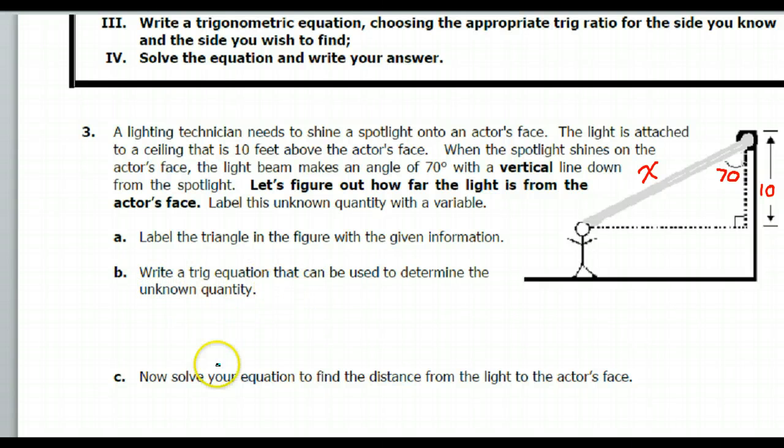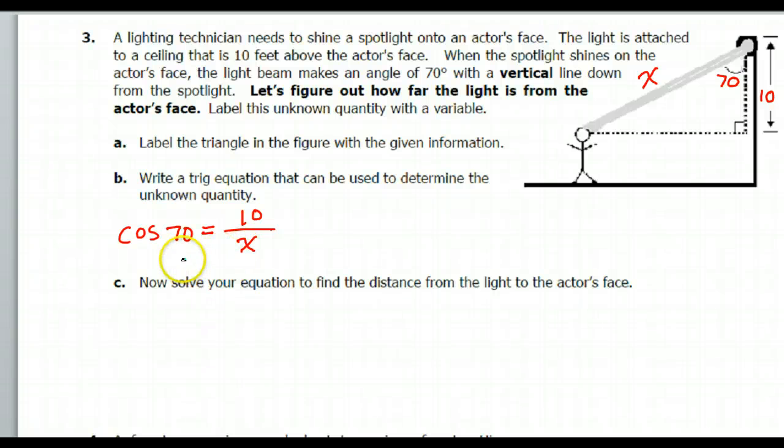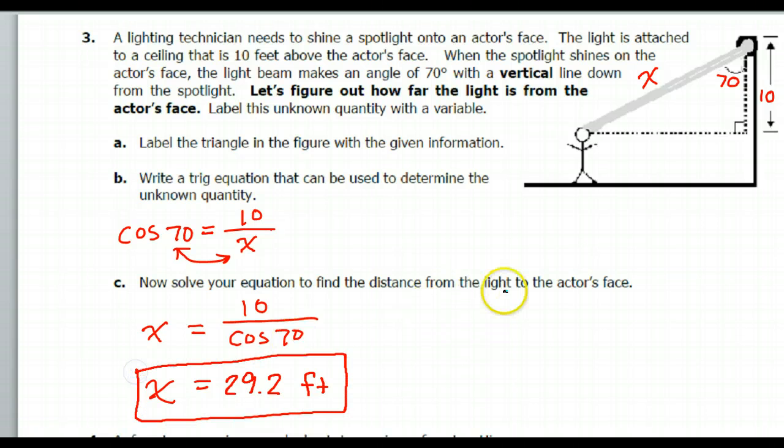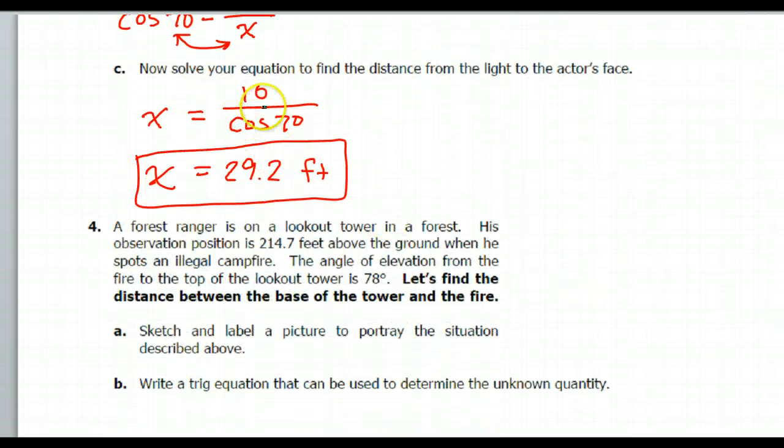Label the triangle in the figure with the given information. Write a trig equation that could be used, and then we're supposed to solve it. Well, 10 is adjacent, x is hypotenuse, so that's the cosine function. So we should be going cosine of 70 is equal to adjacent over hypotenuse, 10 over x. Now, how do we solve equations when the unknown is in the denominator? That's when we do our reversal. So that's why we're going to get x equals 10 over cosine 70. X equals 29.2 feet. That's the distance to the actor's face.